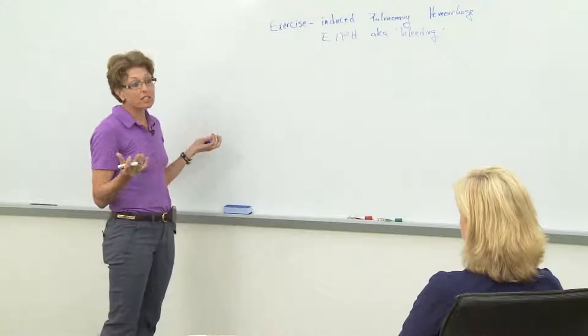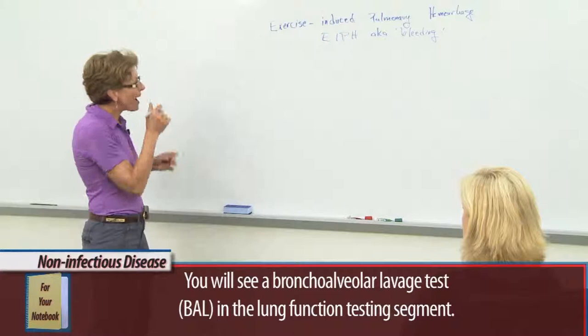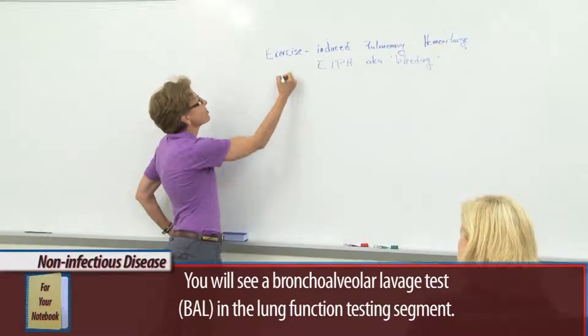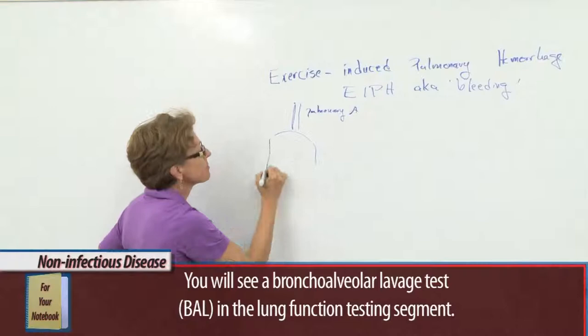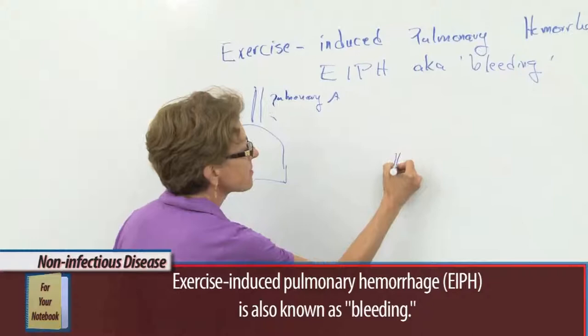So why does this happen? Well, if we look at horse physiology, one of the things you think about, and this is true for humans too, here's your pulmonary artery. It's delivering blood to the lungs. If you look at a lung, let's say this is a capillary, a very small vessel in the lung.